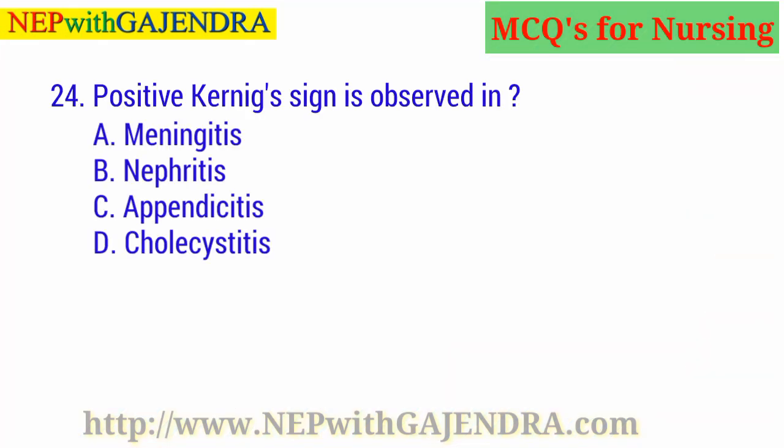Positive Kernig's sign is observed in: A. Meningitis. B. Nephritis. C. Appendicitis. D. Cholecystitis. The right answer is A: Meningitis.